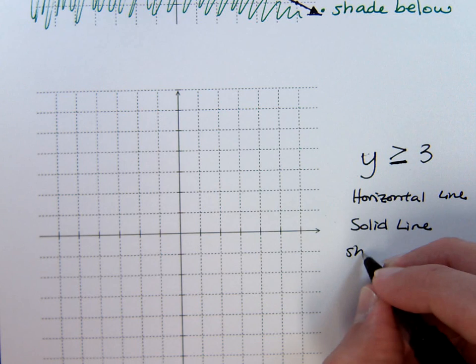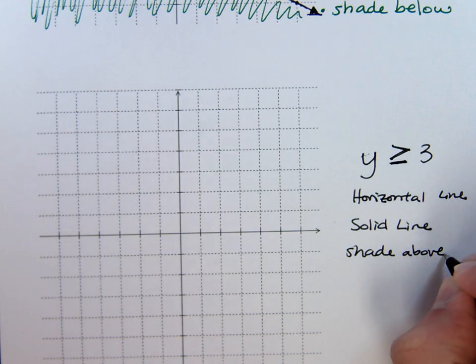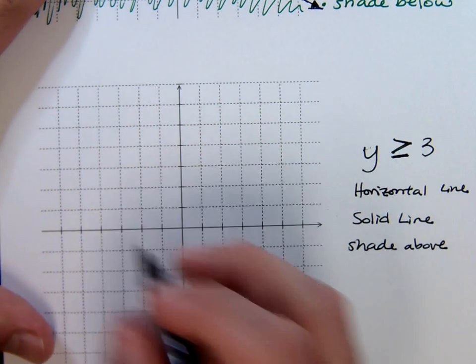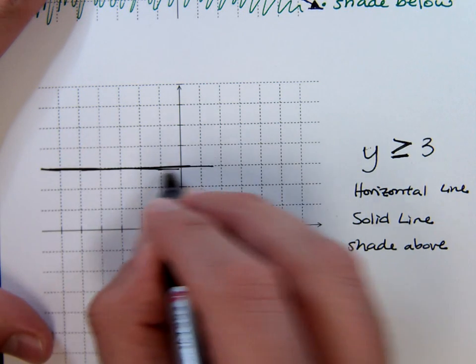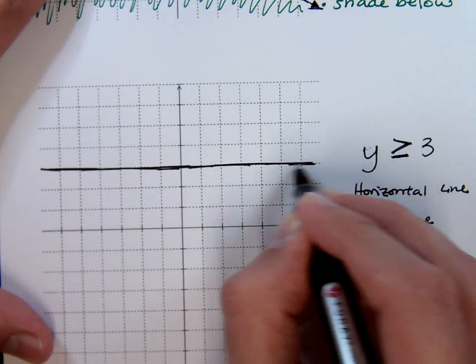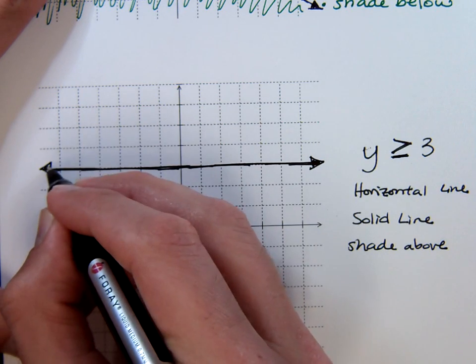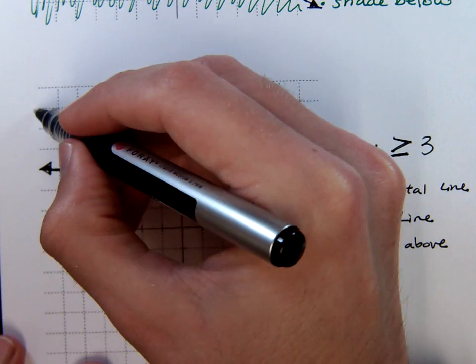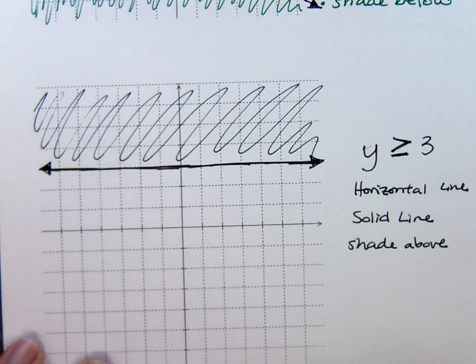And we will shade where? Well, since it says y is greater than, that means we're going to be shading above. So all we have here is a horizontal line going through 3. Solid. Shade above.